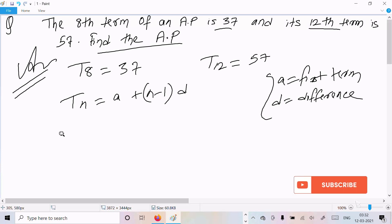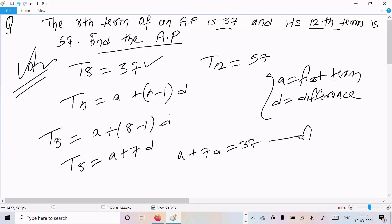So here t8 we can write a plus 8 minus 1 into d. So t8 equal to a plus 7d. And t8 value is 37, so we can write a plus 7d equal to 37. This is equation 1.